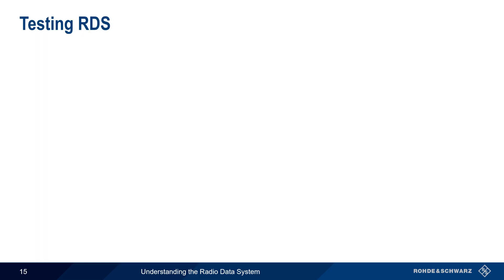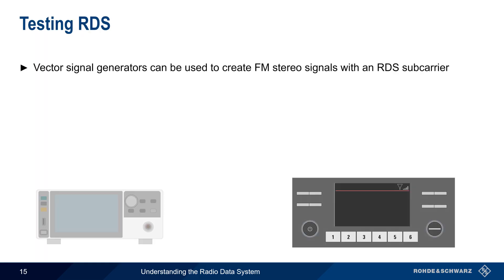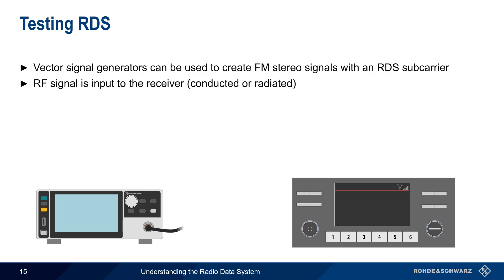Testing RDS functionality in receivers is done using vector signal generators to create FM stereo broadcast signals that contain an RDS subcarrier. The RF output of the generator is then input to the receiver, either via a cable or broadcast over the air.